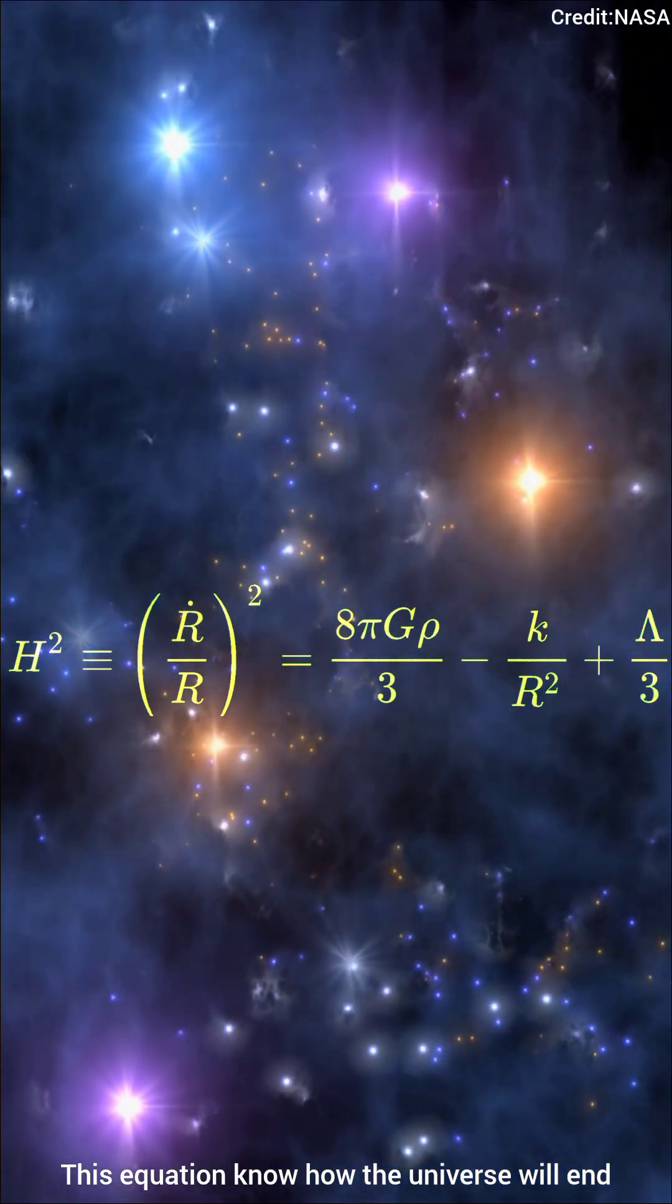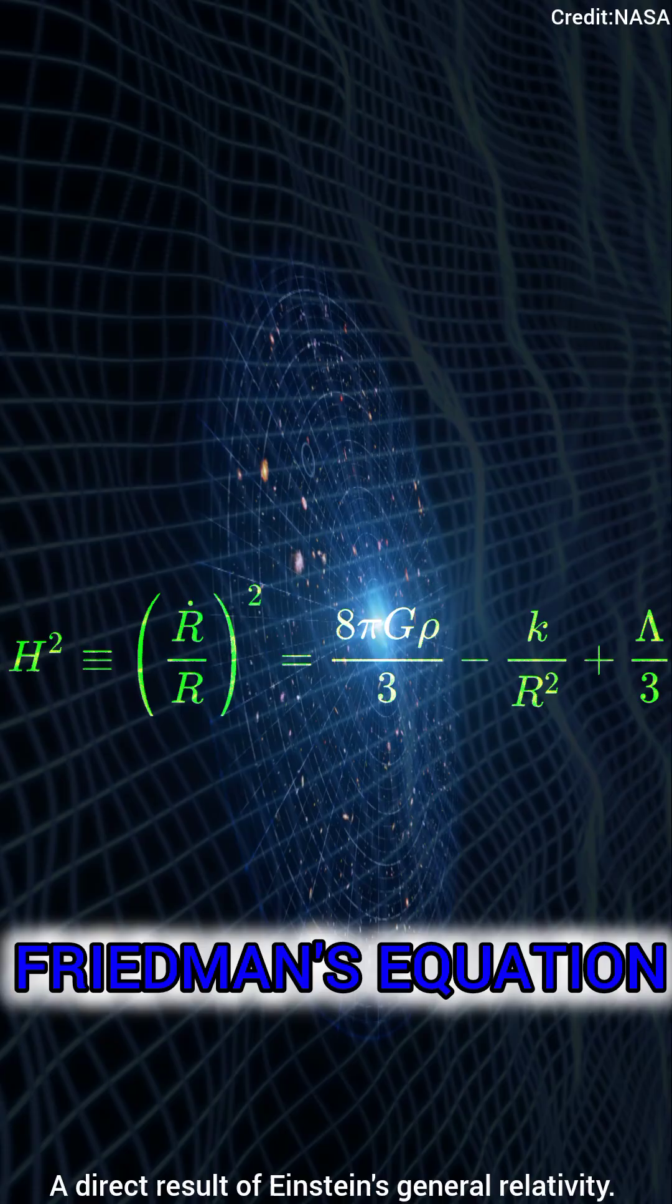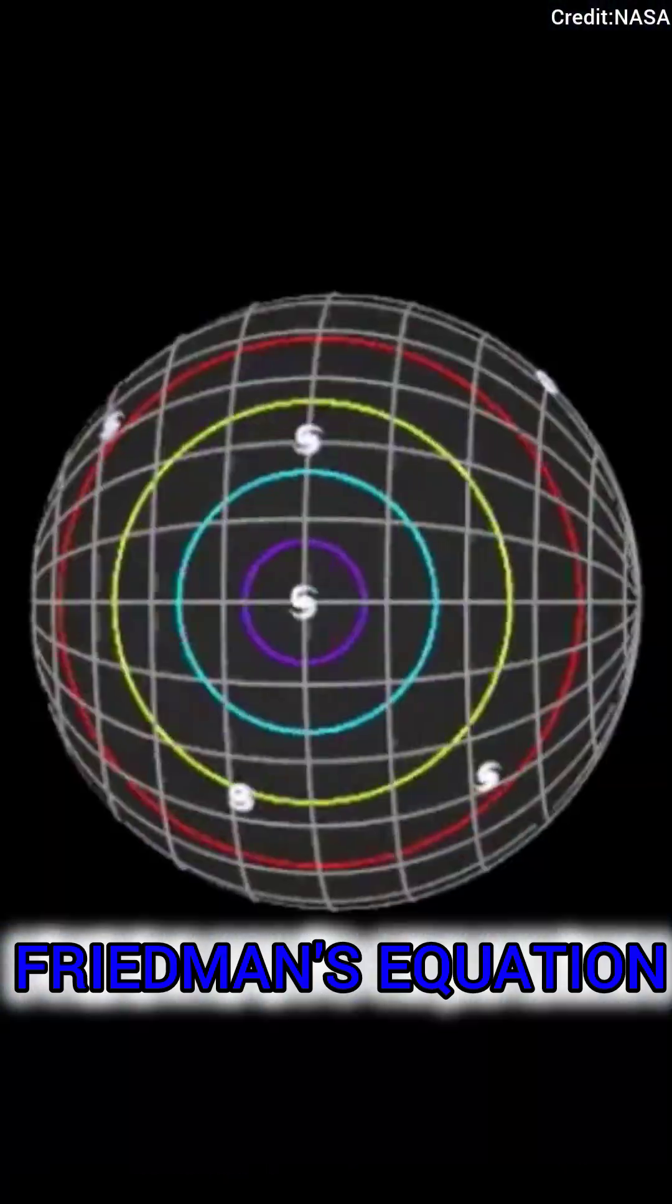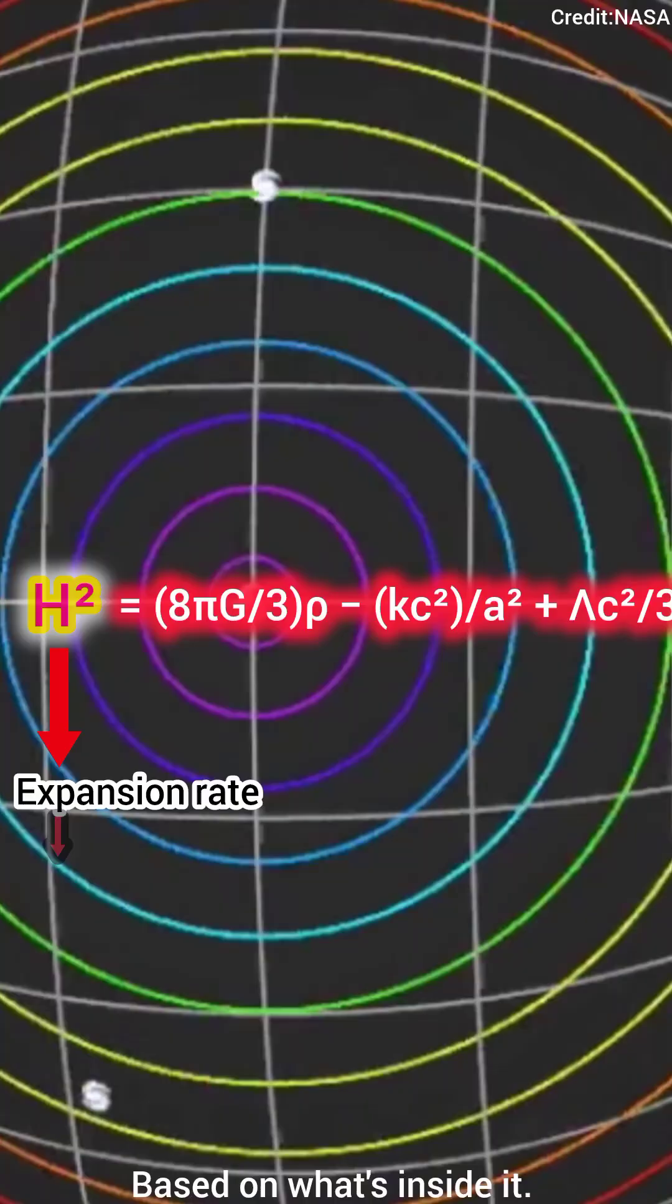This equation knows how the universe will end. It's called the Friedman equation, a direct result of Einstein's general relativity. It tells us about the expansion rate of the universe based on what's inside it.